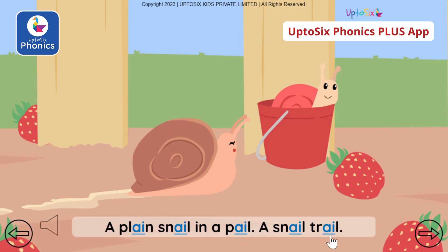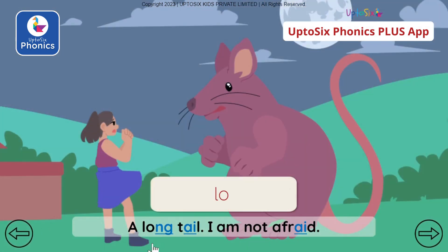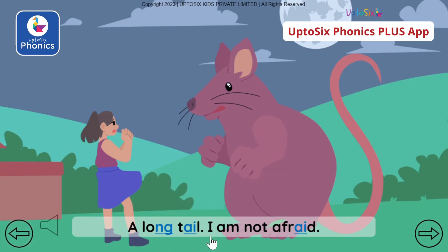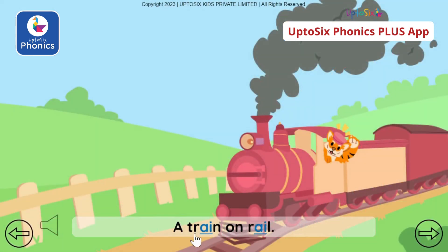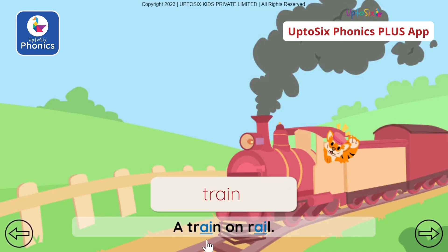A plain snail in a pale. A snail trail. A long tail — 'ai' is a digraph. A long tail. I am not afraid. Through a train or on a rail.